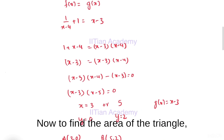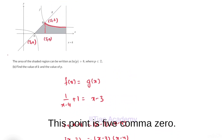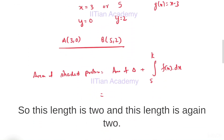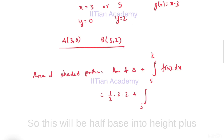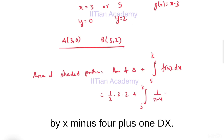To find the area of the triangle, we know this is half base times height. This point is (5, 0), so this length is 2 and this length is again 2. So this will be half times base times height, plus the integral from 5 to K of f(x) = 1/(x-4) + 1 dx.